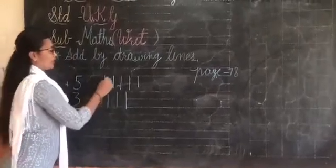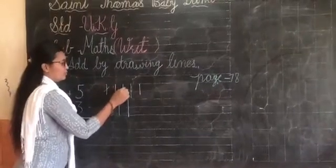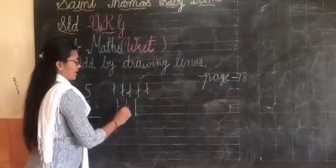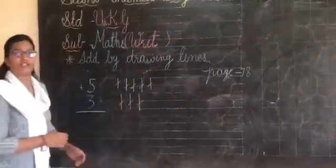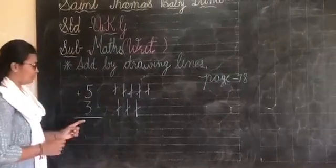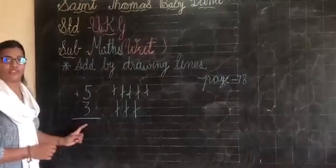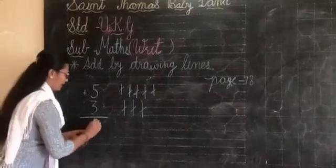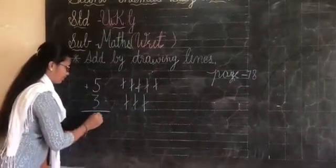Now count together. 1, 2, 3, 4, 5, 6, 7, 8. Answer is 8. So which number we have to write here? No. 5 plus 3 is equal to 8.